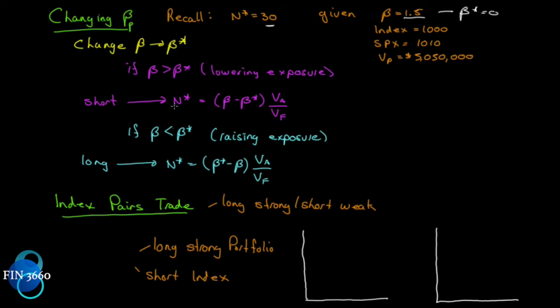So we are going to be short how many contracts. N star equals beta minus beta star. So again, if beta star is 0.75, we would go from 1.5 minus 0.75 times the value of our portfolio divided by the value of one contract. If originally at a beta of 1.5, getting to zero required shorting 30, getting halfway there would require shorting 15.